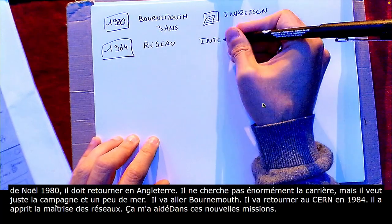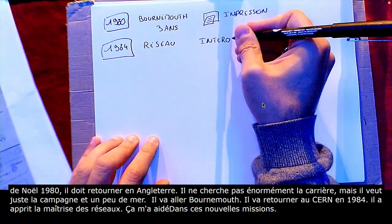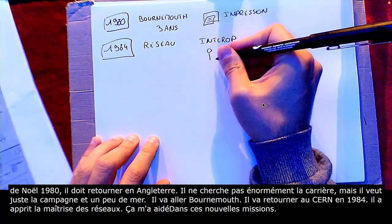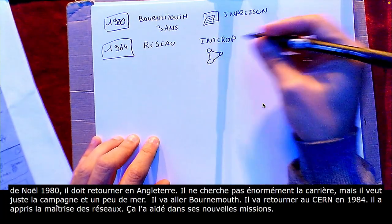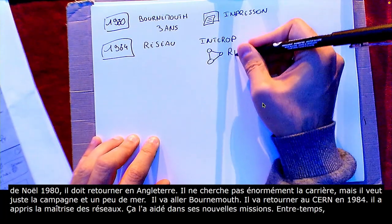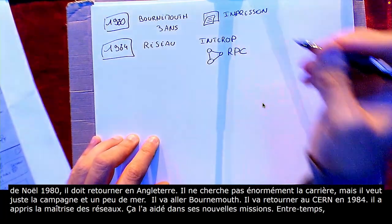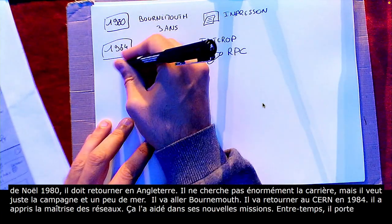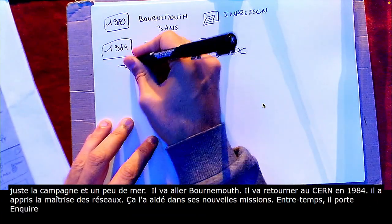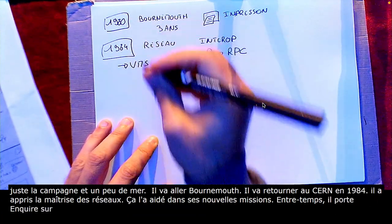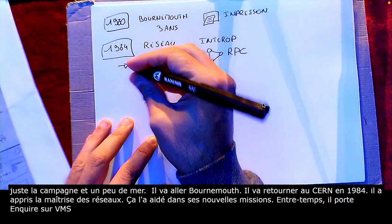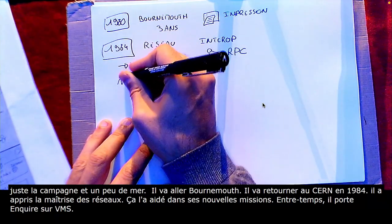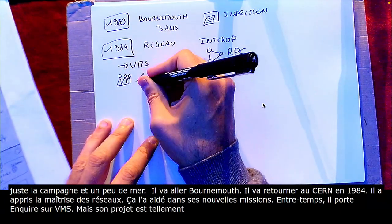Je vous ai dit, ils sont très différents. Et pour ça, il va utiliser du Remote Procedure Call. Entre-temps, on lui a filé une autre machine qui fonctionne sur un autre système d'exploitation, VMS. Donc, évidemment, il porte Inquire sur VMS. Mais il ne fait aucun effort particulier pour que ce soit utilisable par d'autres personnes. Pourtant, son projet est tellement bien et tellement utile que d'autres personnes vont quand même se mettre à l'utiliser.